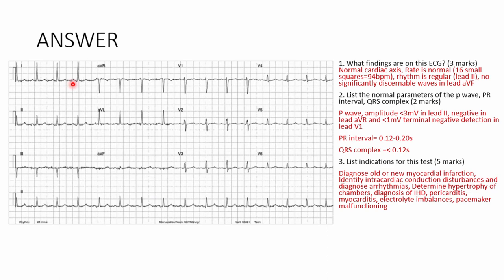Regarding axis: comparing leads I, II, III, and AVF, leads I and III face in opposite directions, which might suggest left axis deviation. However, left axis deviation is only significant when lead II is also facing downwards. RS wave progression appears normal. Normal ECG parameters: P wave amplitude < 3 mV in lead II, negative in lead AVR, < 1 mV terminal negative deflection in V1. PR interval: 3–5 small squares (0.12–0.20 seconds / 120–200 ms). QRS complex: < 0.12 seconds (1–3 small boxes).